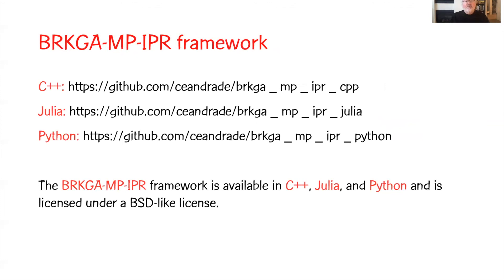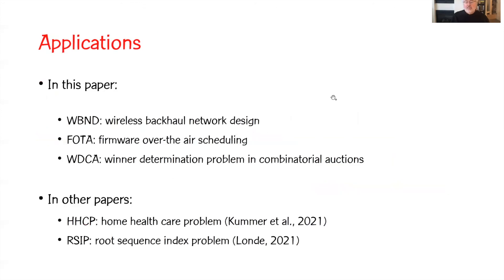We've produced a framework distributed as software for this BRKGA and IPR framework in C++, Julia, and Python, available under a BSD-like license. This has been applied to a number of problems. In this paper, we apply it to wireless backhaul network design, firmware over-the-air scheduling, and winner determination in combinatorial auctions. In other papers, it's been applied to home healthcare and root sequencing index problems.